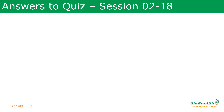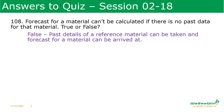Before going into the session, let us see the answers for the quizzes of last session. Forecast for a material cannot be calculated if there is no past data for that material — true or false? Because if you have past details for a similar material, we can treat it as a reference material and it can be used to forecast another material's forecast. For example, you have material A for which there is no forecast, but if there is a similar material B for which there was past consumption, then we can use the consumption of material B as the past reference and use it.